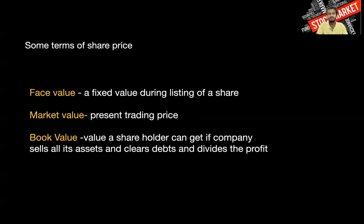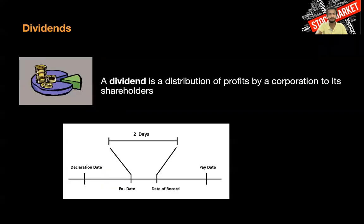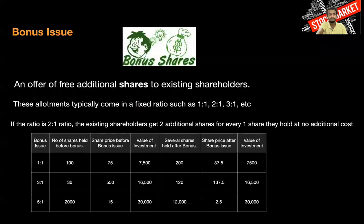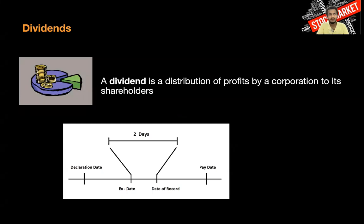Market value is the present trading price. Book value is what each share would get if the company sold all its assets, cleared all its debts, and distributed the remaining profit to shareholders.